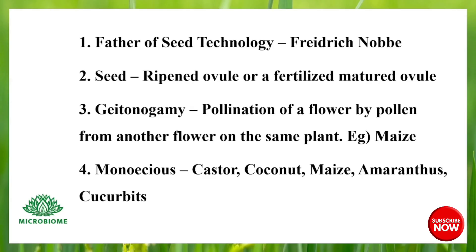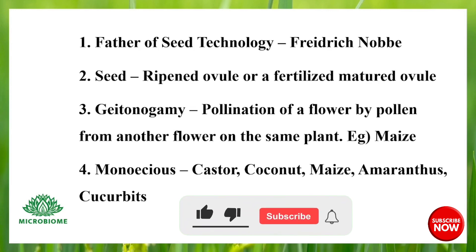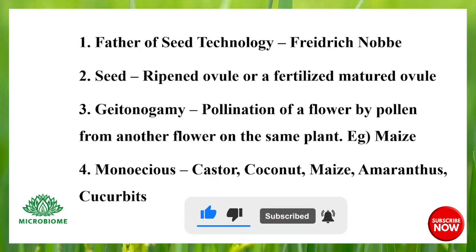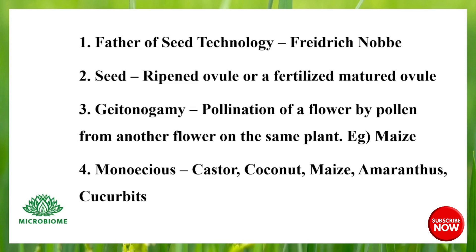First, the father of seed technology. A ripened ovule or a fertilized matured ovule is called a seed. Geitonogamy is the pollination of a flower by pollen from another flower on the same plant. Example: maize. Examples for monoecious plants are castor, coconut, maize, amaranthus, and cucurbits.